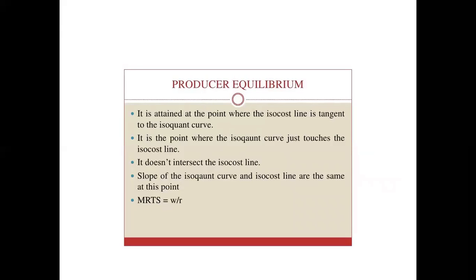Now coming to the actual topic — after understanding isoquant, MRTS, and iso cost, we can understand producer equilibrium. Producer equilibrium is attained at the point where the iso cost line is tangent to the isoquant curve. At this point, the iso cost line touches but does not intersect the isoquant, because each isoquant holds a different combination of labor and capital. The slope of the isoquant and the iso cost line are the same at this point, meaning MRTS equals W upon R, the ratio of the cost of labor to capital.